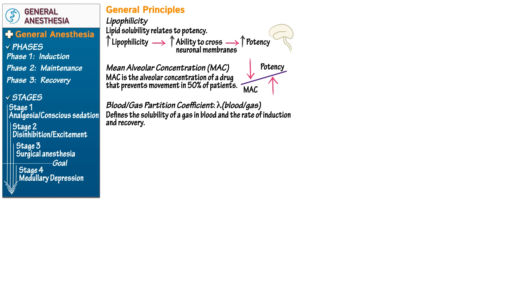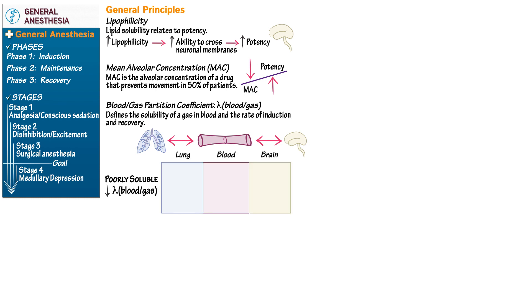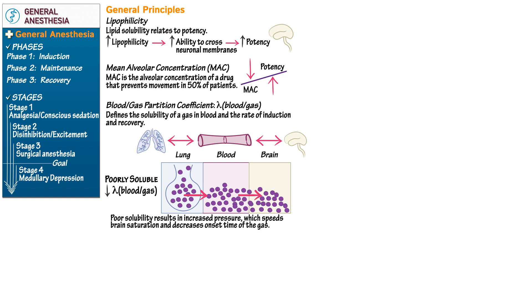To understand this concept, consider a diagram with lungs, vasculature, and a brain. In the case of a poorly soluble gas with a low blood-gas partition coefficient, the drug travels into the alveoli and enters the blood where it is poorly soluble. This increases the partial pressure of the drug because it doesn't dissolve in the blood, forcing it out of the blood and into the brain more easily.